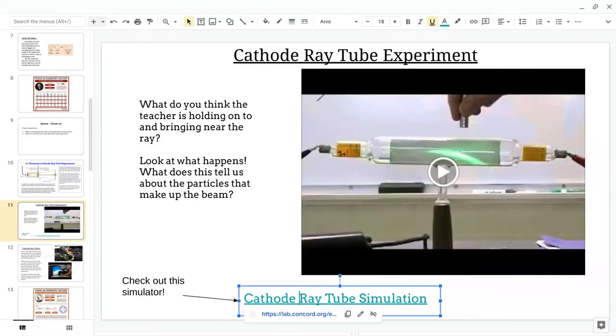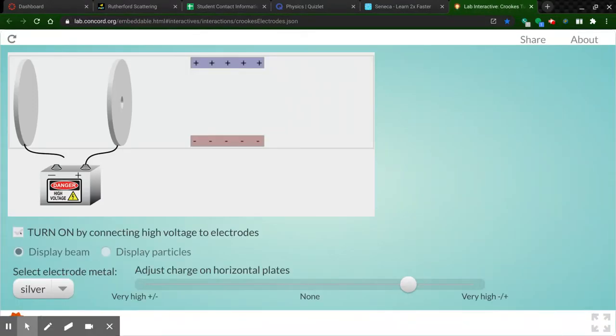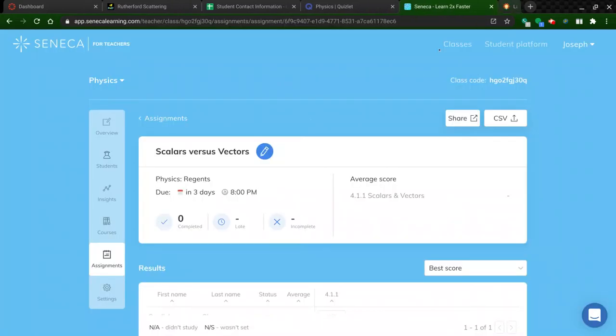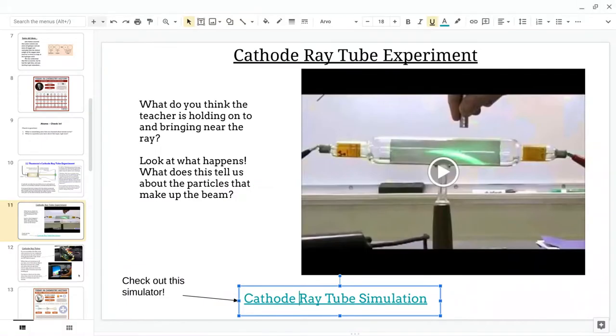But the fact that this stuff gets moved by a magnet means that it has an electric charge. It turns out that electrons are negative. The negative end of the magnet was causing a repulsion. Therefore, the particles must be negative. That's a cathode ray tube. There is a simulator that I encourage you to play with. I'm not going to mess with it here. And if you notice, you have a positively charged piece of metal plate and a negatively charged piece of metal plate.